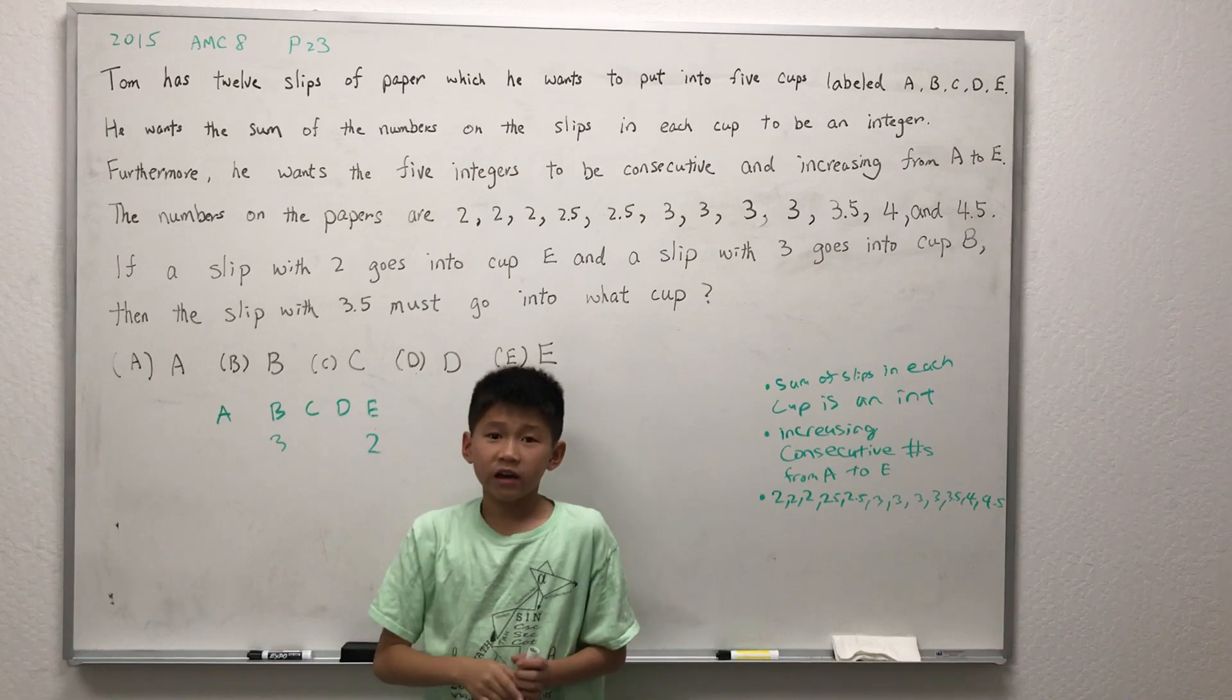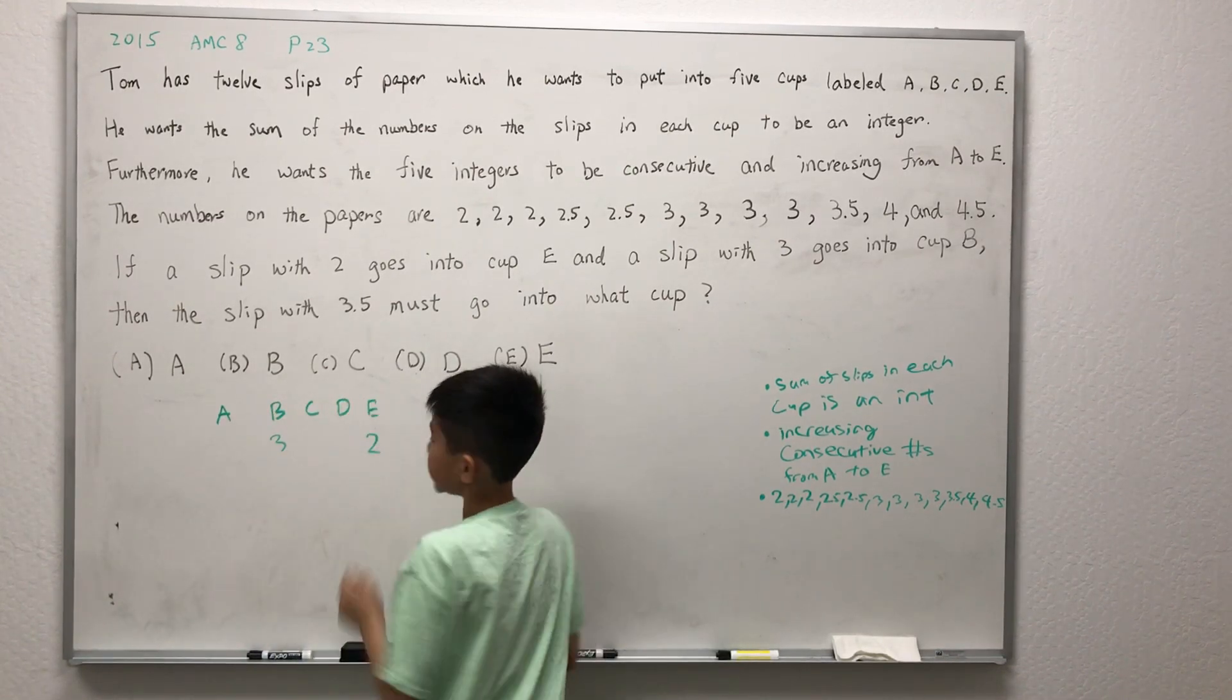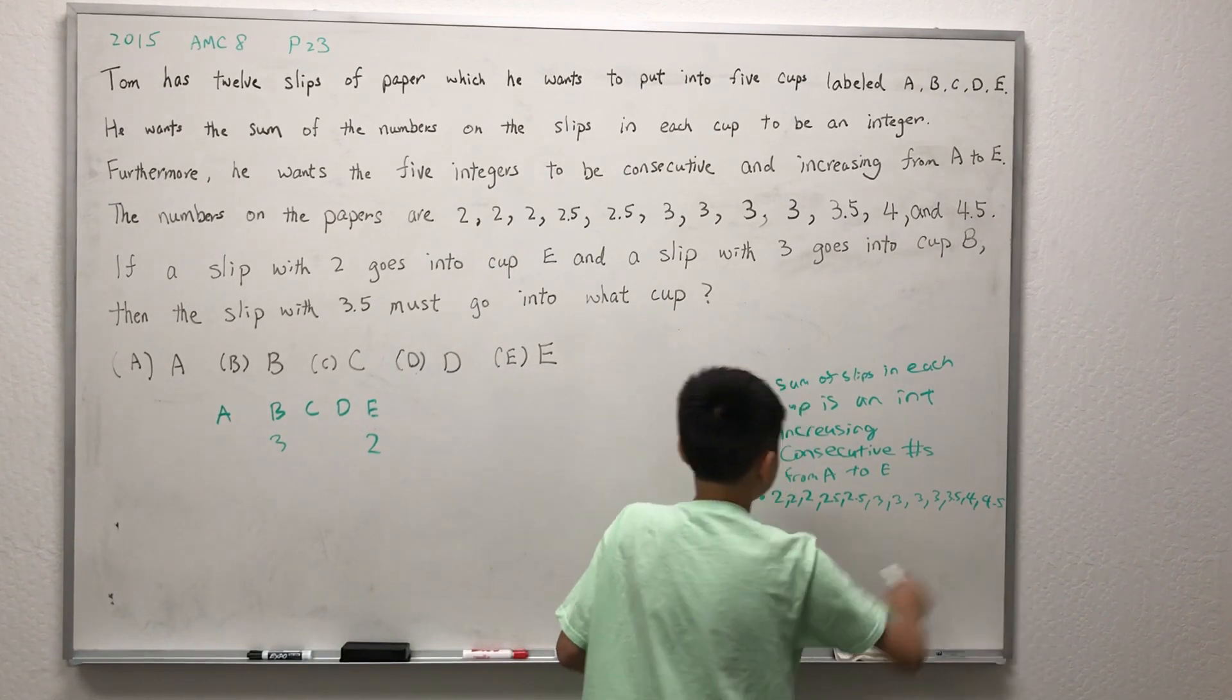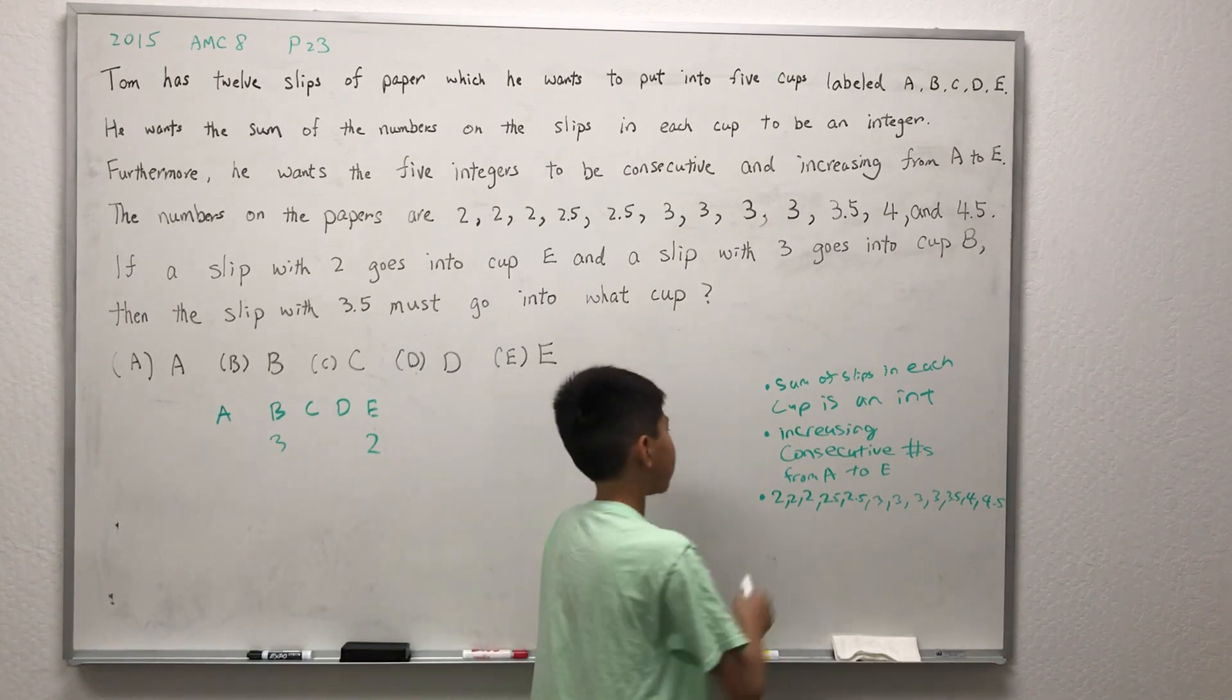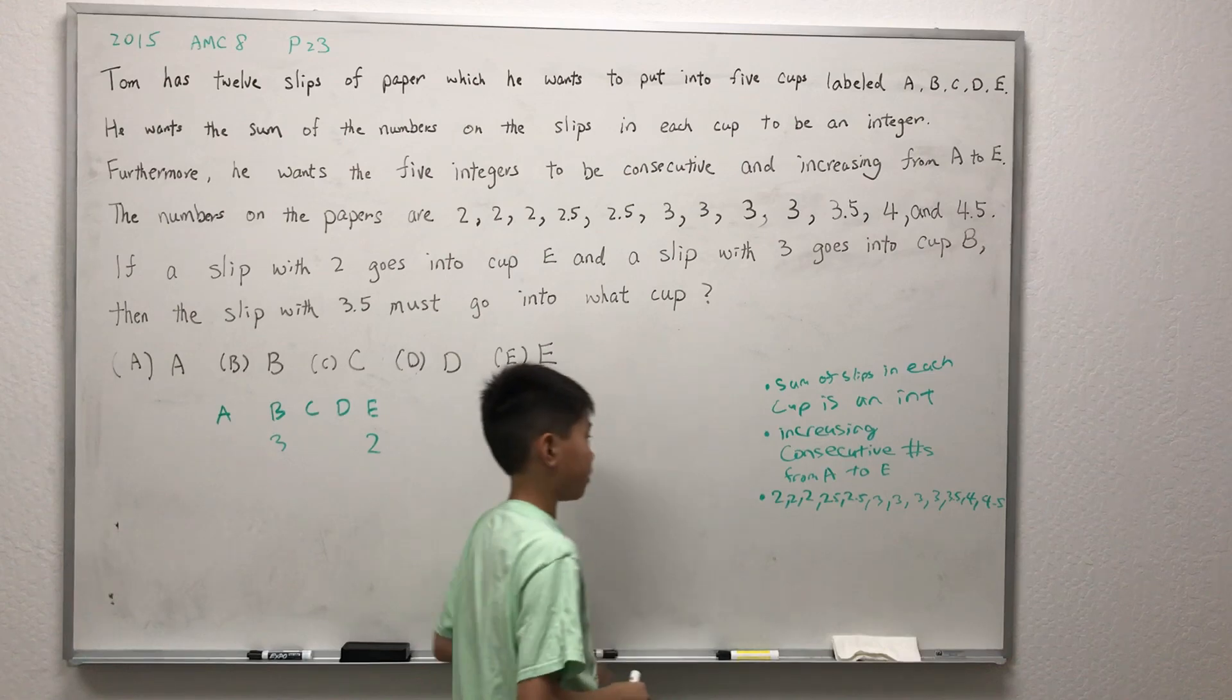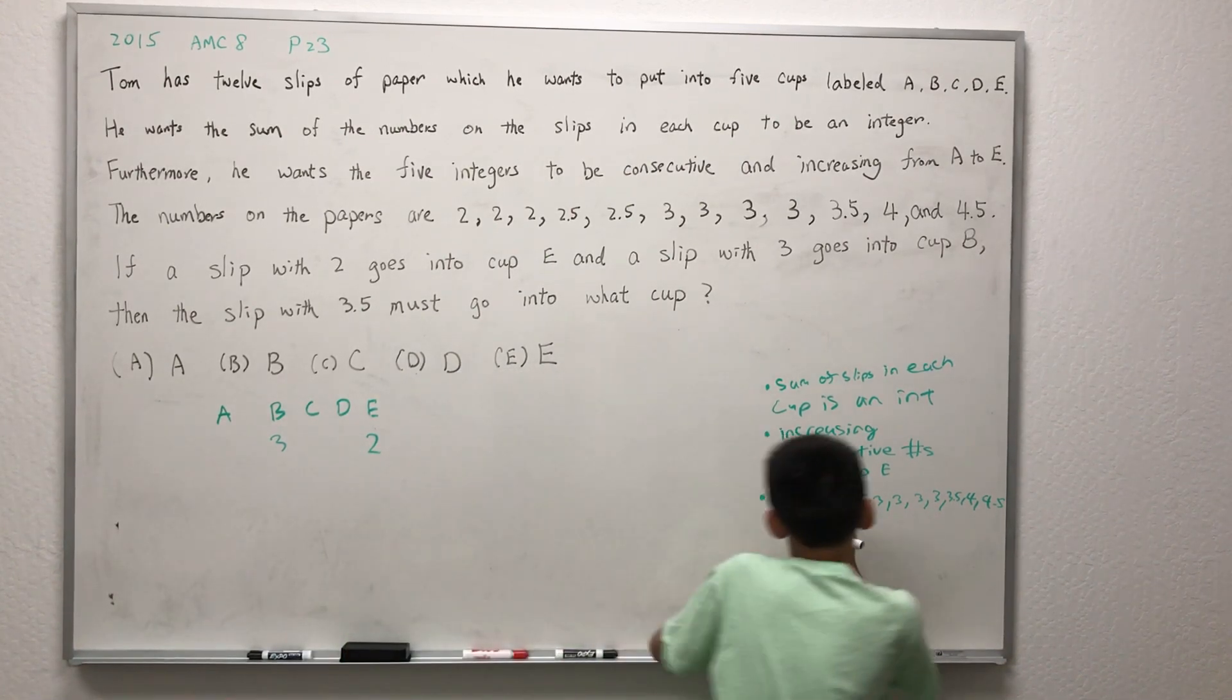The plan of attack for this problem is to first find the values in each of the cups. To do that, we'll add the numbers on the slips of papers and use the fact that the cups are in increasing consecutive order from A to E to help us.